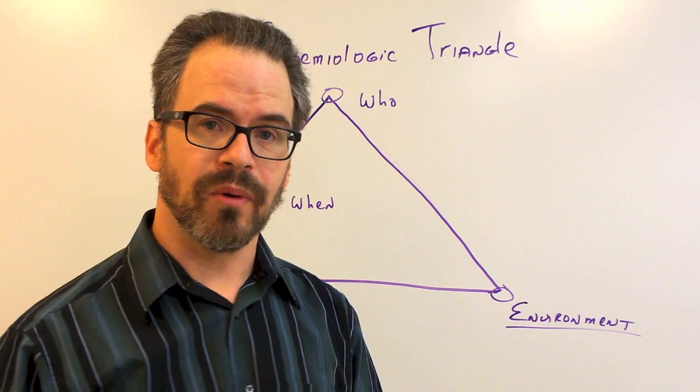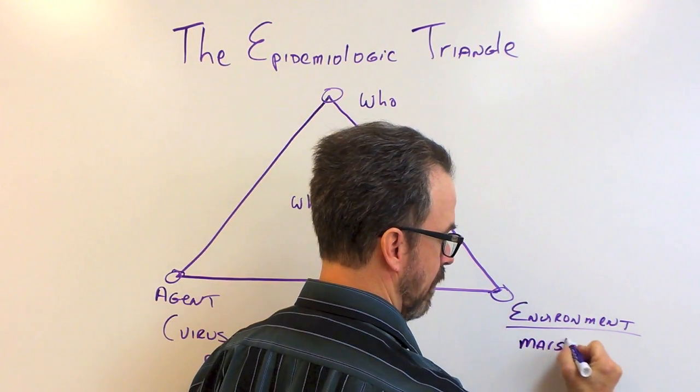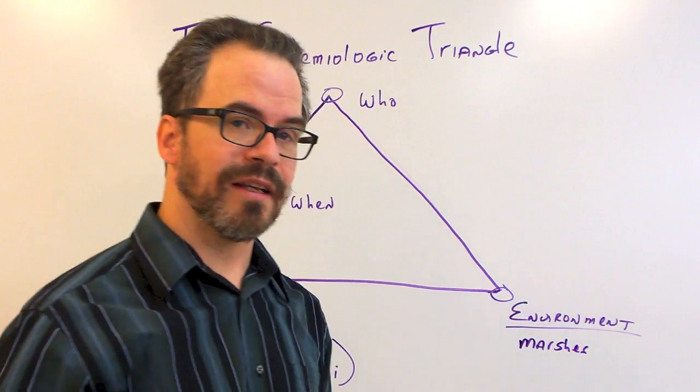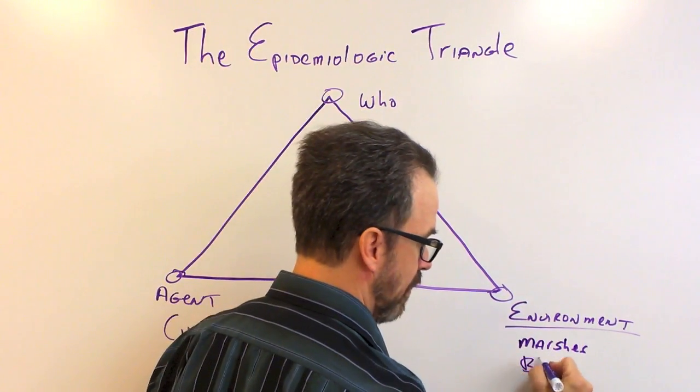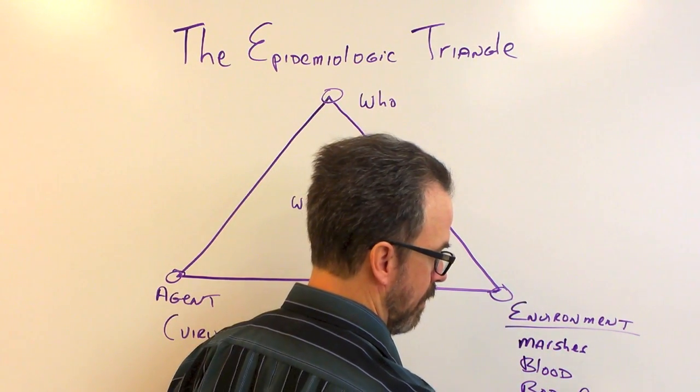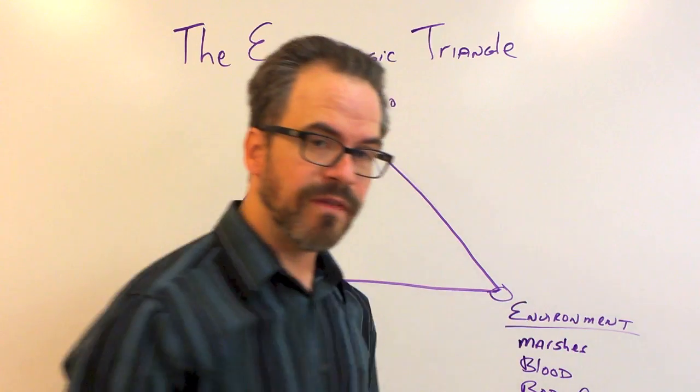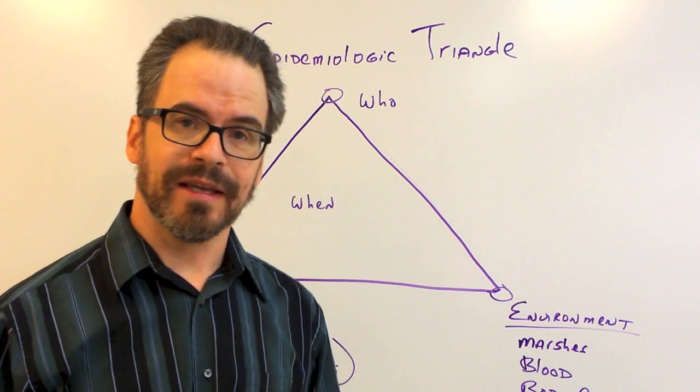So for example, if we're studying a mosquito-borne disease, the environment might be in marshes. If we were studying, say, HIV, the environment where HIV lives is blood or body fluids. So environment refers to where the disease normally is.